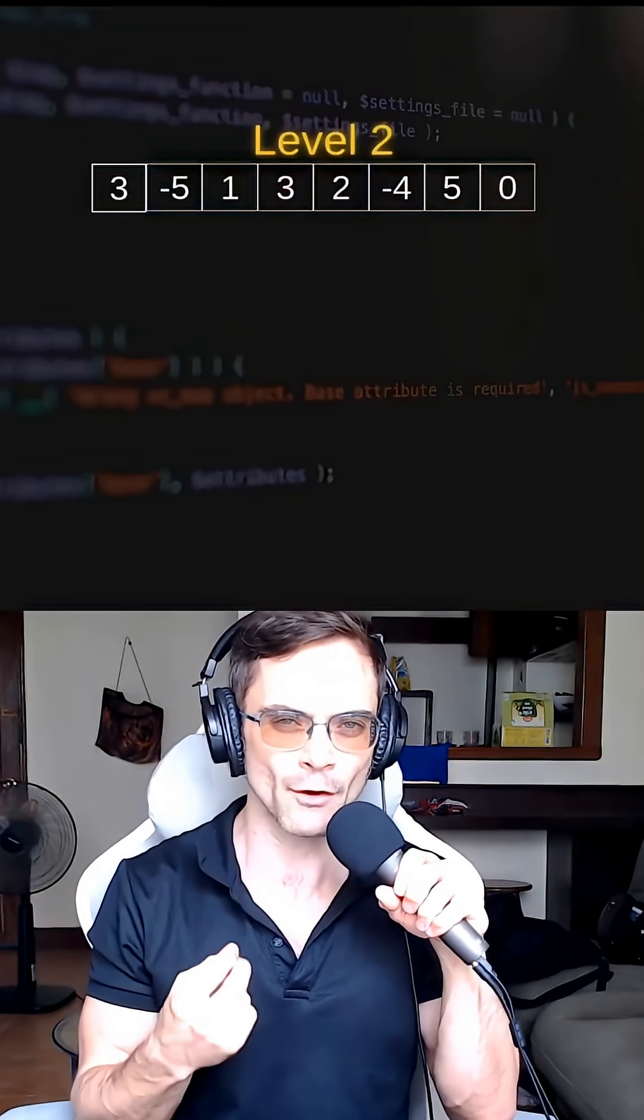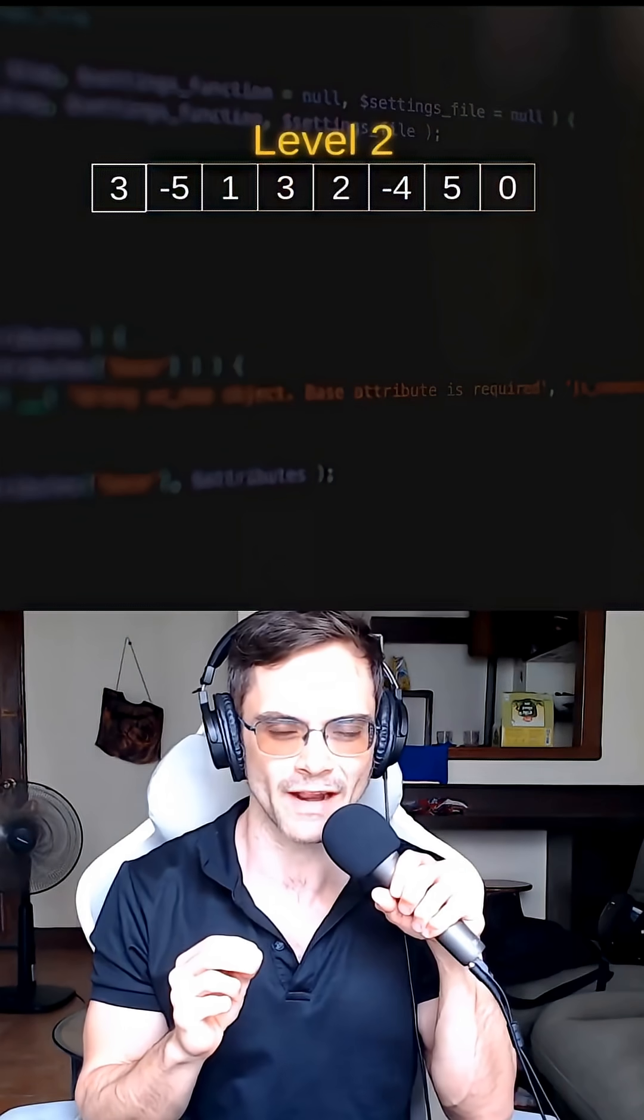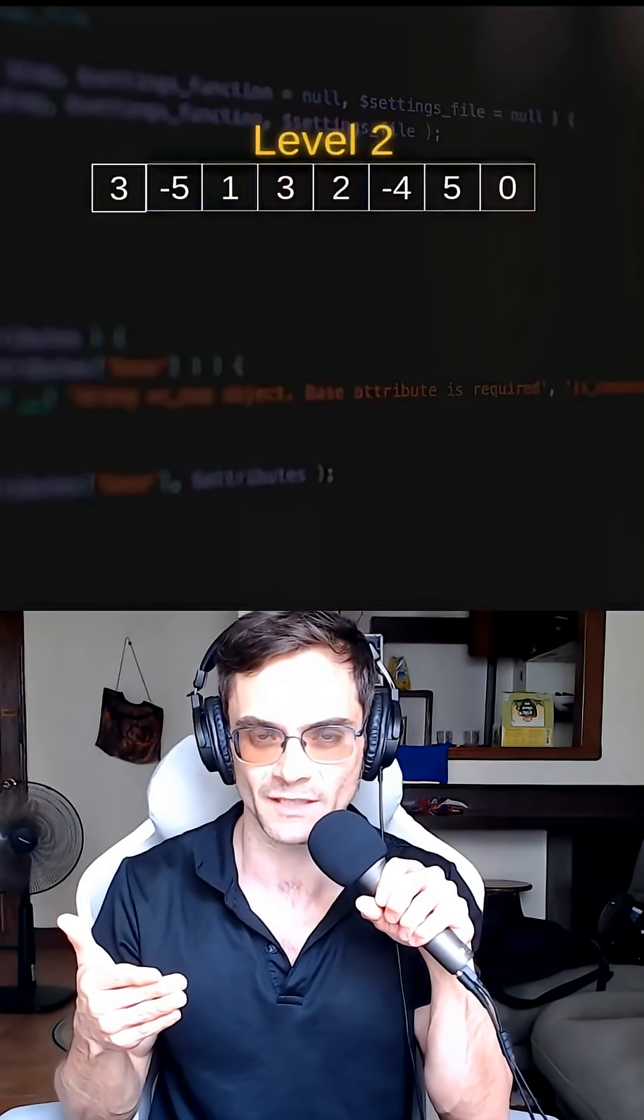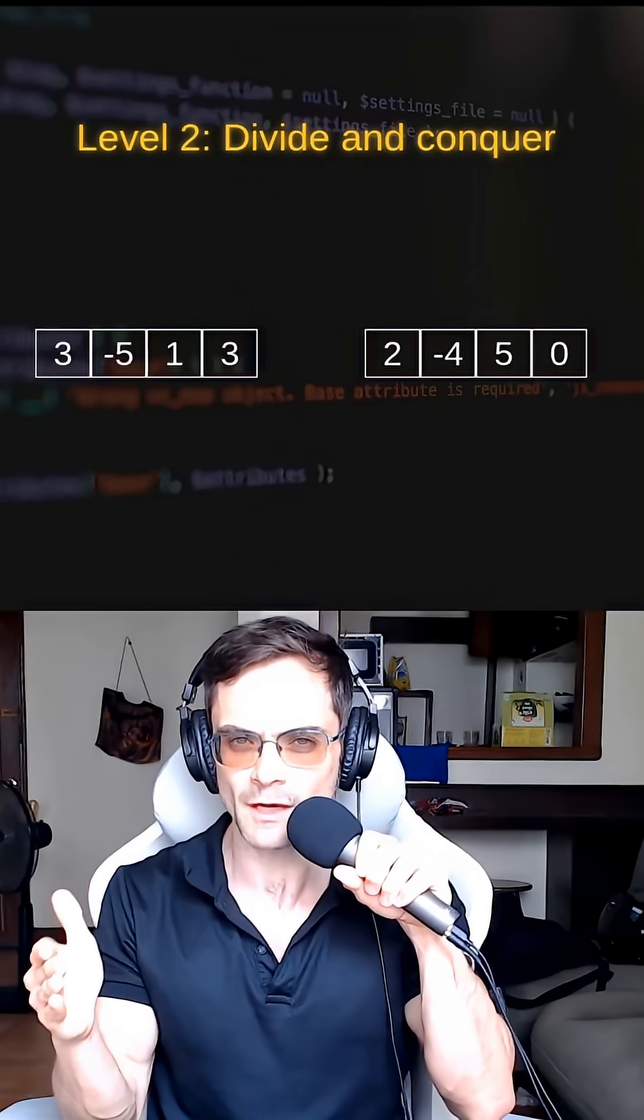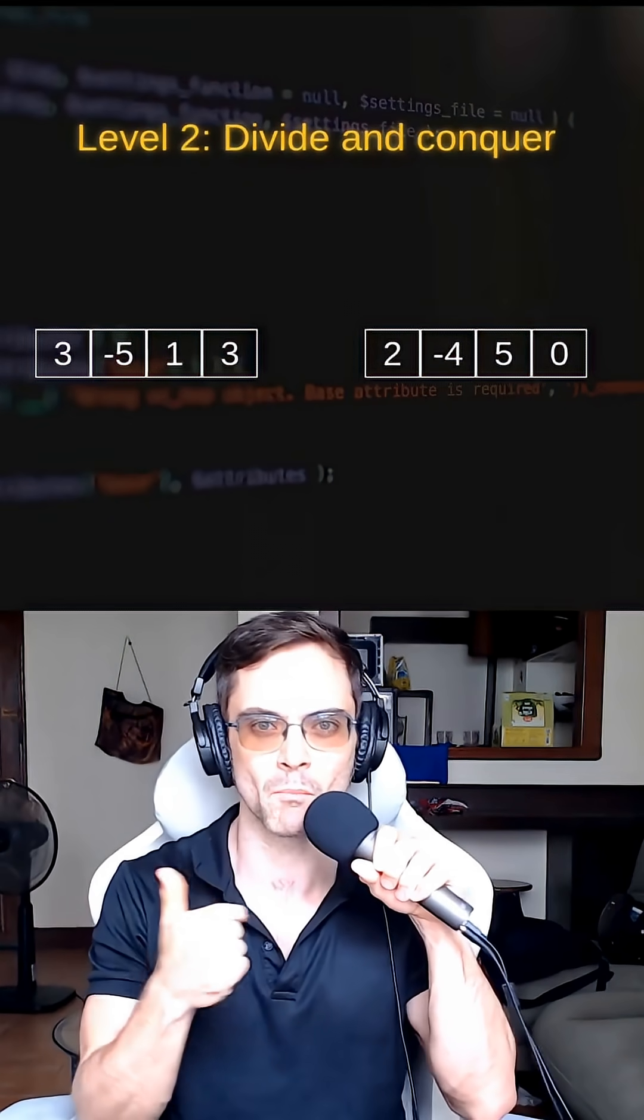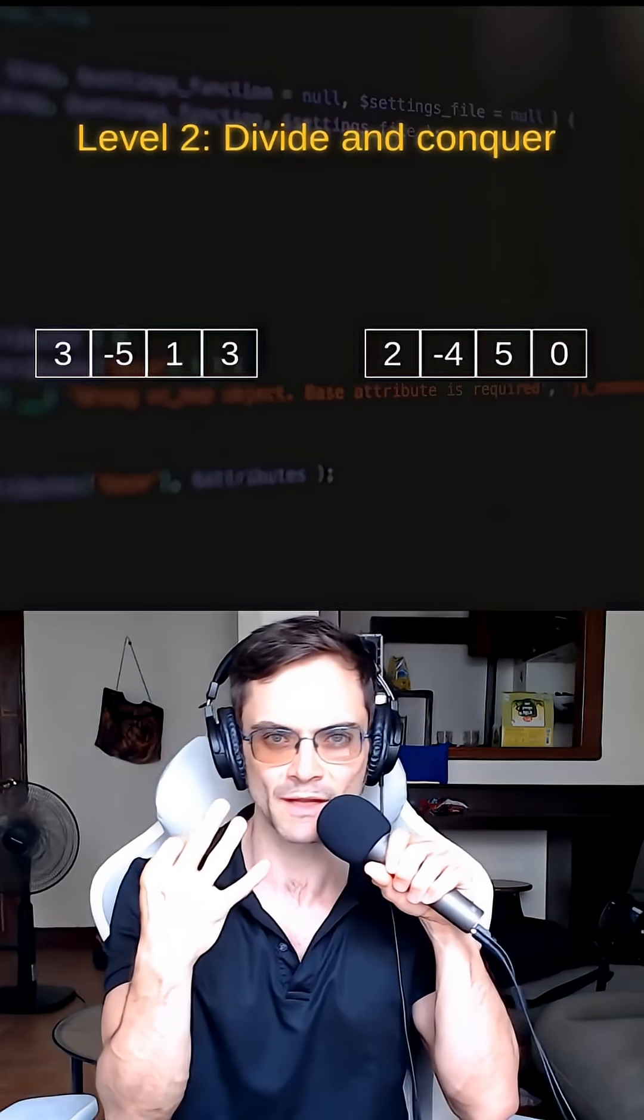To find the maximum subarray sum out of an array in less than quadratic time, we can't look at all possible ranges. So if we split this problem into left and right subproblems, we know that the maximum possible subarray has to be in one of three places.